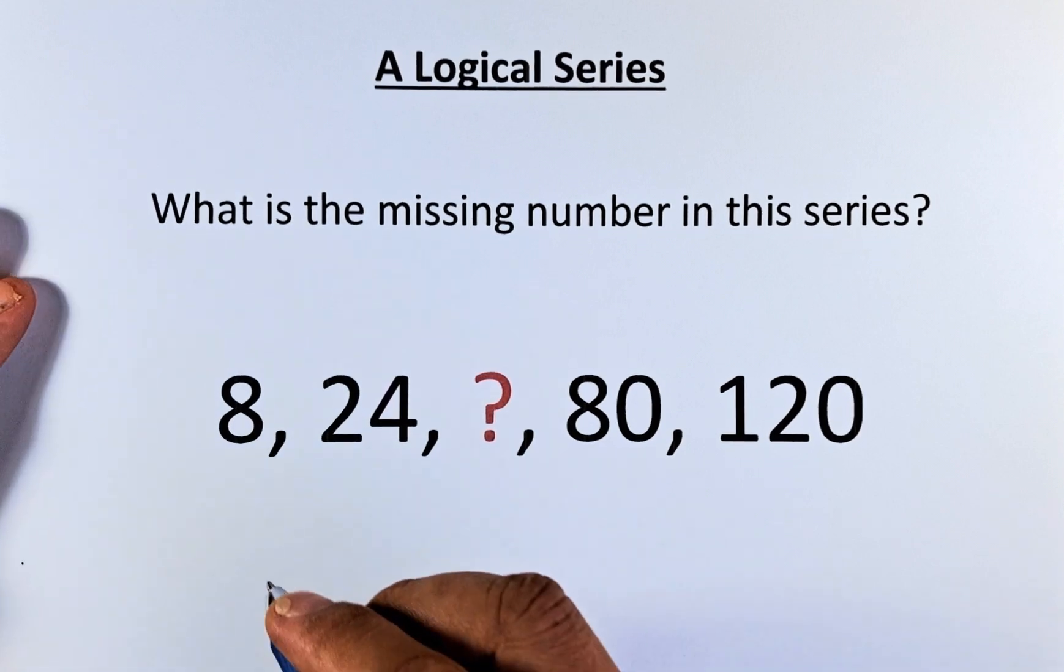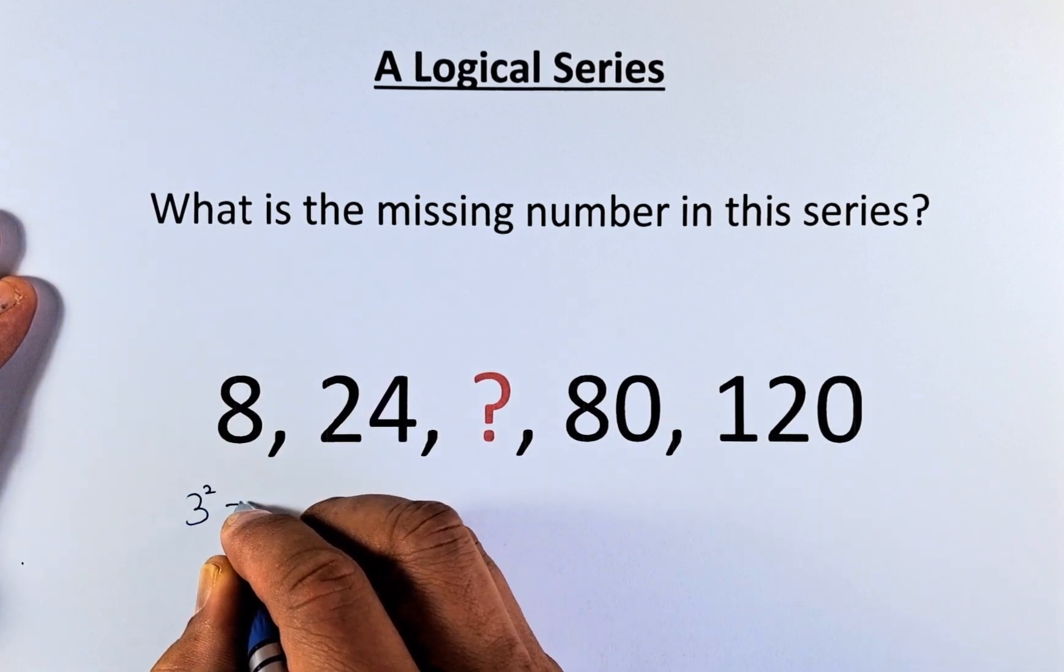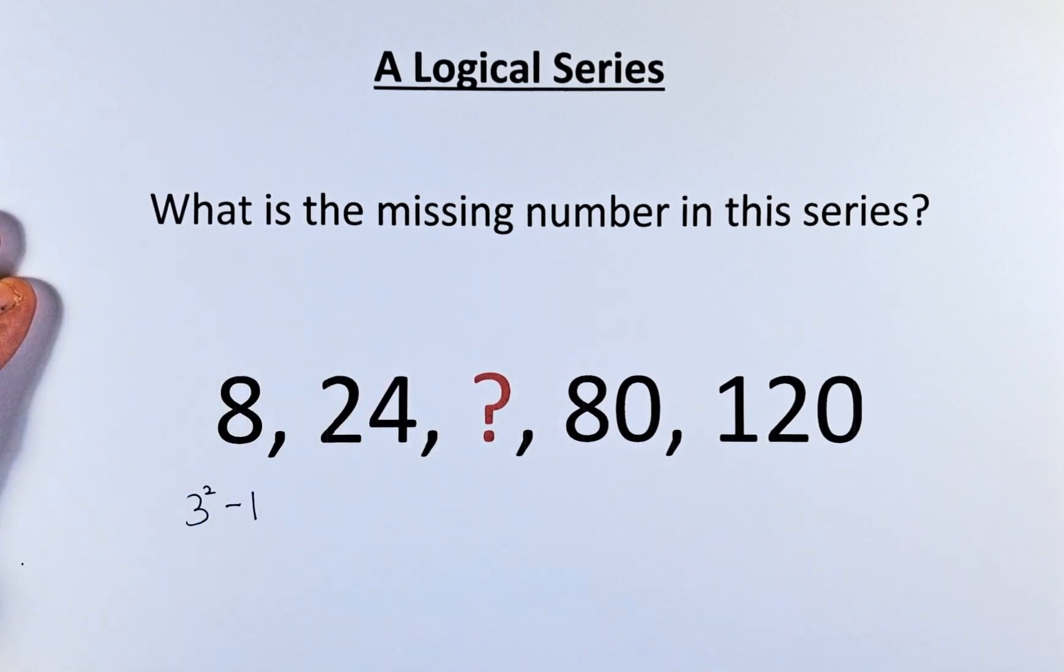The ideal way is as follows. So now, 8 is equal to 3 squared, which is 9 minus 1. So 9 minus 1 will give you 8.